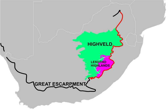The Highveld is the portion of the South African Inland Plateau which has an altitude above roughly 1,500 m, but below 2,100 m, thus excluding the Lesotho mountain regions to the southeast of the Highveld. It is home to some of the country's most important commercial farming areas, as well as its largest concentration of metropolitan centres, especially the Gauteng Conurbation, which accommodates one-third of South Africa's population.